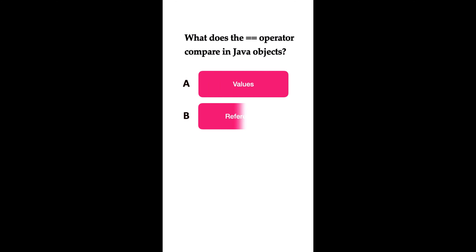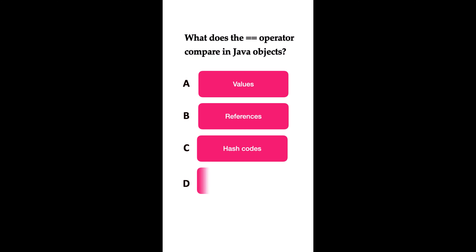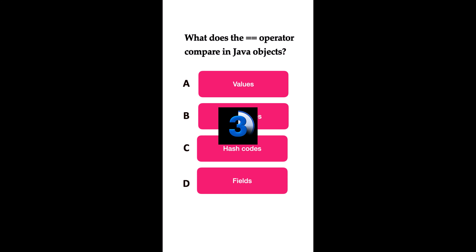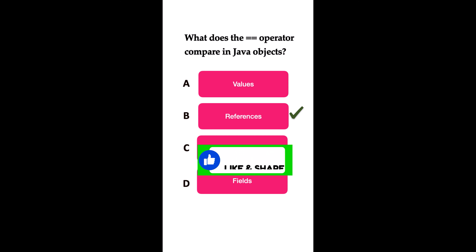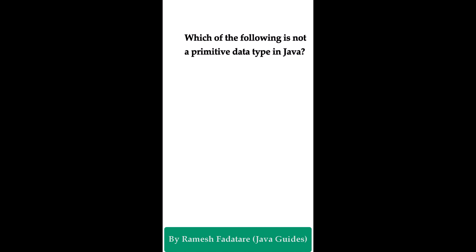What does the == operator compare in Java objects? Option A: values. Option B: references. Option C: hash codes. Option D: fields. The answer is references. The == operator compares the memory addresses or references of two objects, not their contents. If two object references point to the same memory location, == returns true; otherwise false. To compare actual content, use the equals method, which can be overridden in your classes to compare object properties.